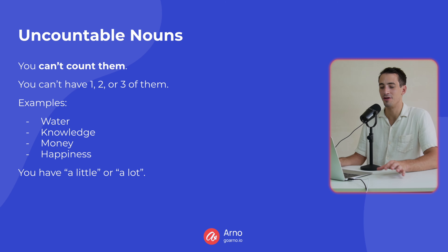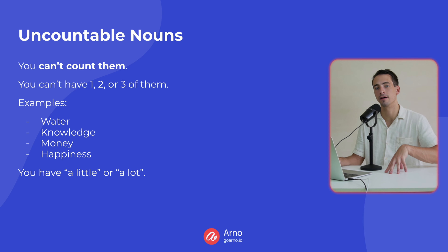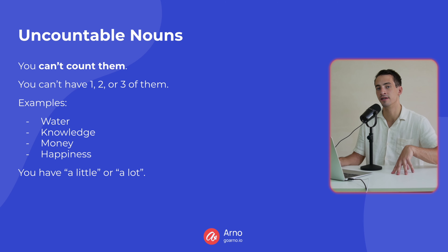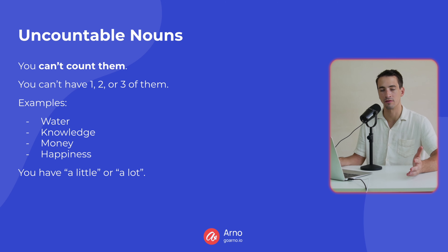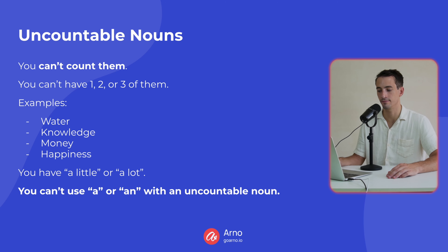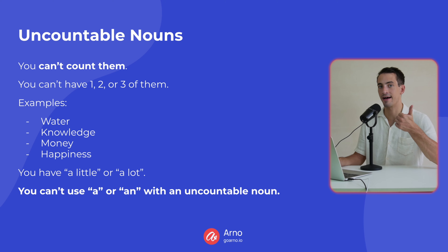Instead, you have a little or a lot. You can have a lot of water, or a little water. Or a lot of knowledge, or a little knowledge. That's how you indicate the amount for uncountable nouns. The other rule is that you can't use 'a' or 'an' with an uncountable noun, because you can't count them — you can't have one of them.